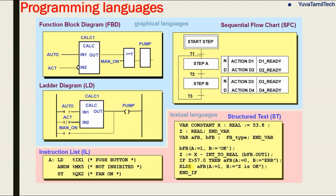Programming languages in the PLC: there are five languages in PLC. You can use functional block diagram, sequential flow chart, ladder diagram, instruction list, or structured text. In this series, we will use ladder diagram, as it is easy.